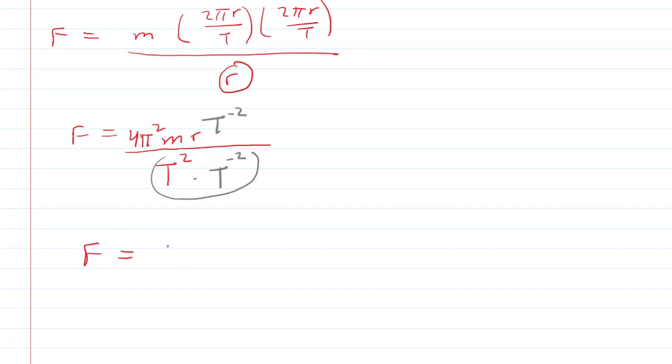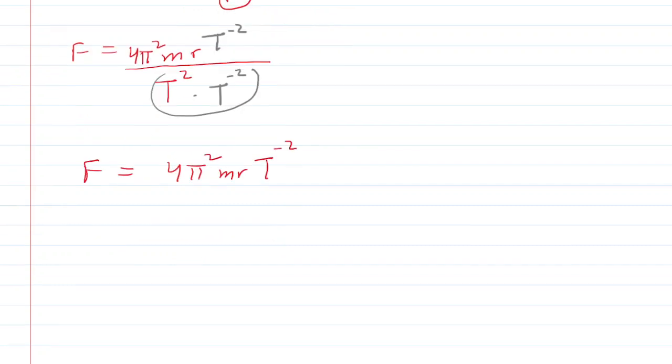So basically, this is all over 1. We have 4π²mr times t^(-2). It's all over 1, but we don't need to write that.